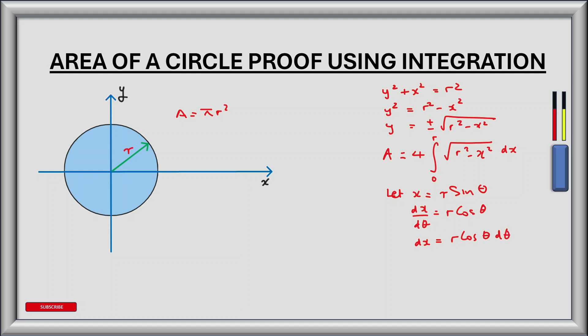Using this substitution, the area of the circle can be written as 4 times the integral from theta equals 0 to theta equals pi divided by 2. From 0 to 90 degrees, theta goes from here all the way through to pi by 2 radians.